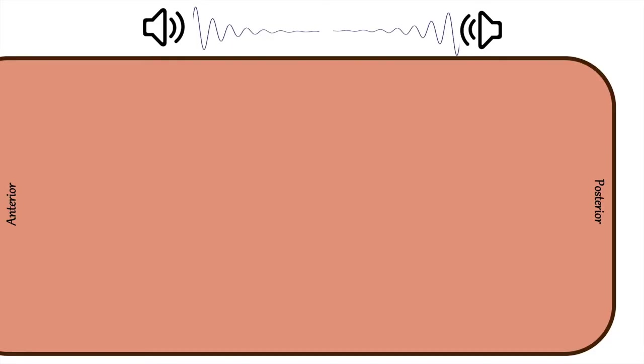So, how are these somites formed? Let's first set up our scene. Since the clock and wavefront model is a symphony of many things that result in somite formation, we'll compare the process to an actual symphony.